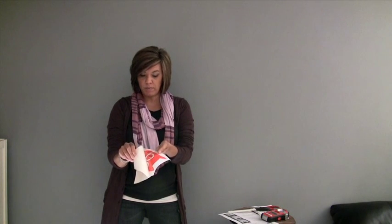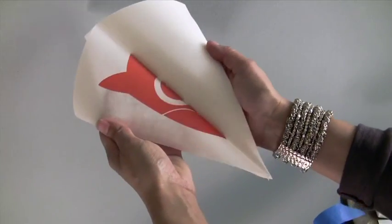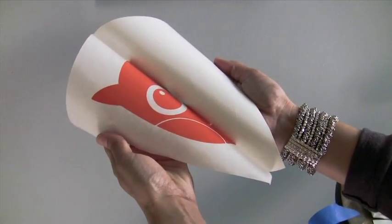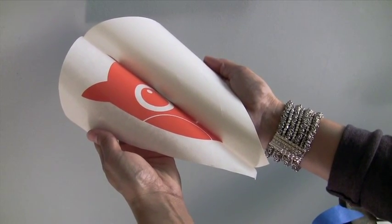As you can see the decal comes in three sections. This is the backing paper, it's like a wax paper. This is the masking tape that holds all the pieces of the design together, like the little eyes and wings, keeps them all right where they're supposed to be. And then the decal is in the center. The decal is really thin, about the thickness of a piece of paper, so when it's on the wall it looks painted on.